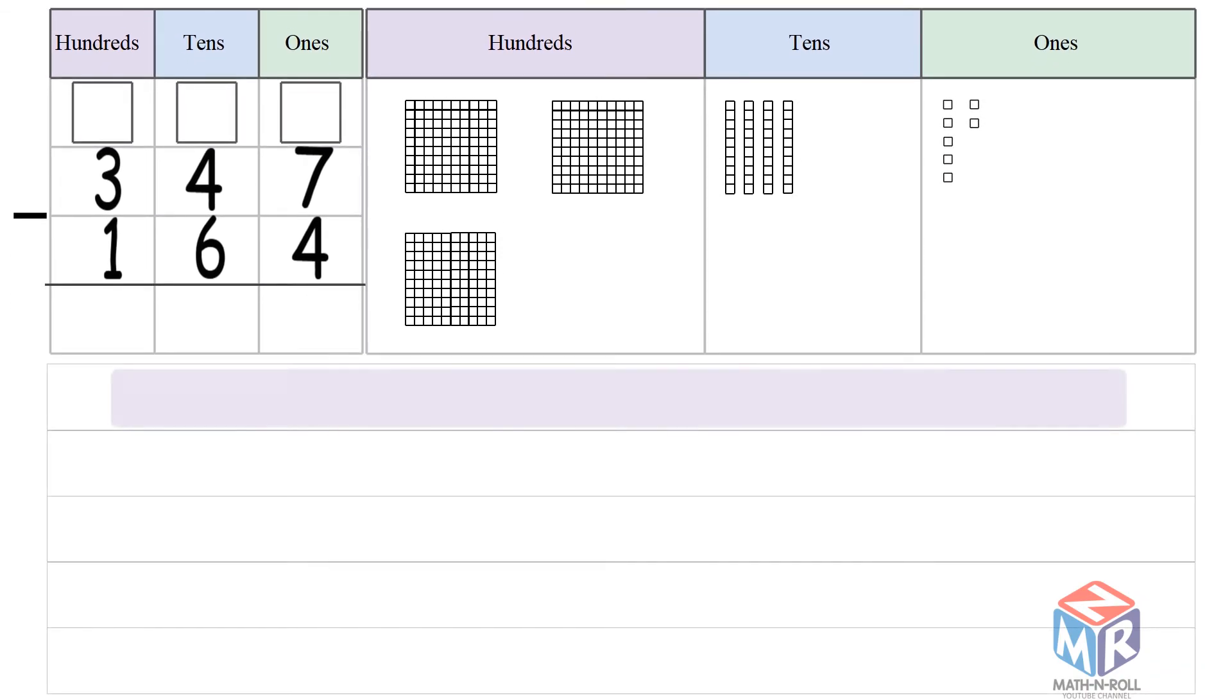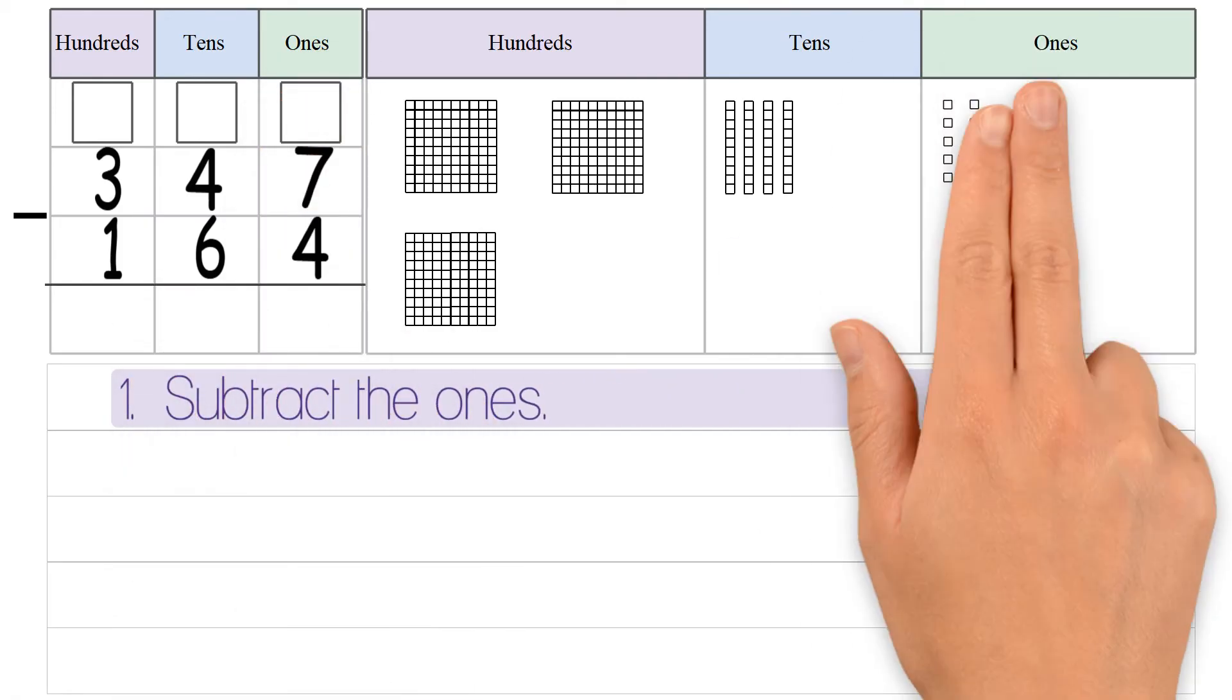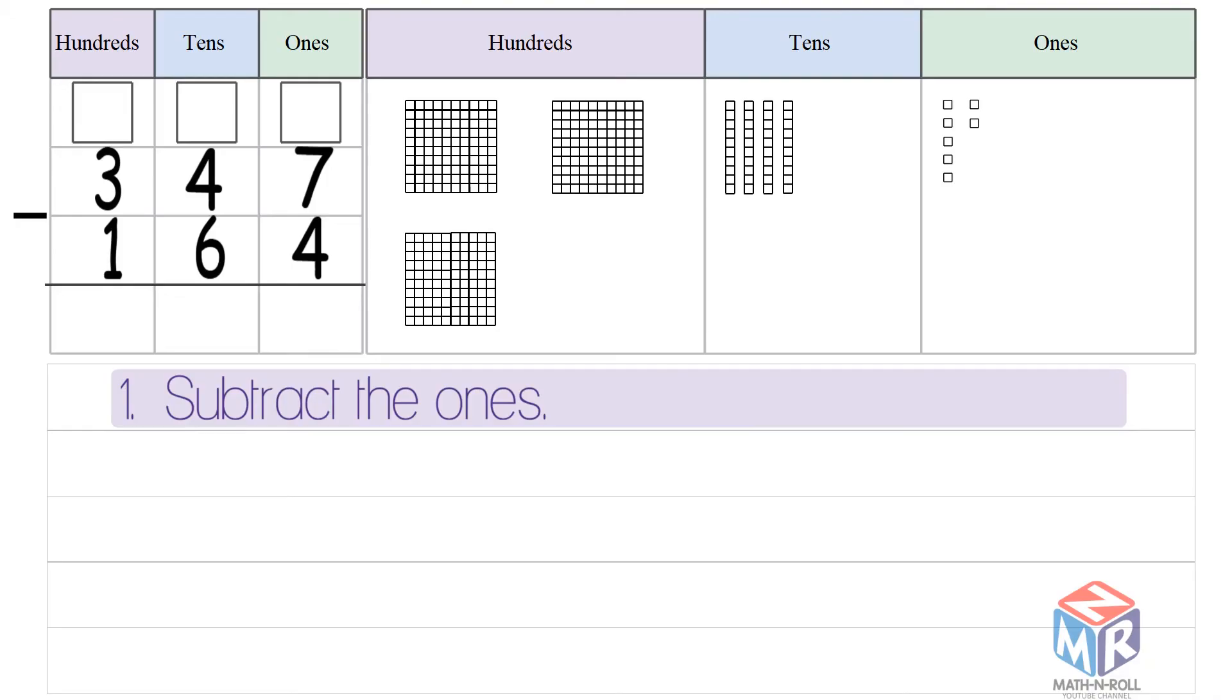First, we subtract the ones. 7 minus 4 is equal to 3.